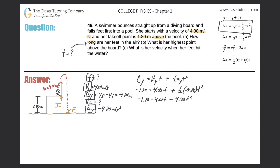I already realize I'm going to have a quadratic — I've got a squared term, a non-squared term, and a constant. What I want to do is put this into a form where I set the equation equal to zero. Adding and subtracting terms to the left side gives: 4.90t² minus 4.00t minus 1.80 equals zero. This is my a value (4.90), this is my b value (negative 4.00), and this is my c value (negative 1.80).